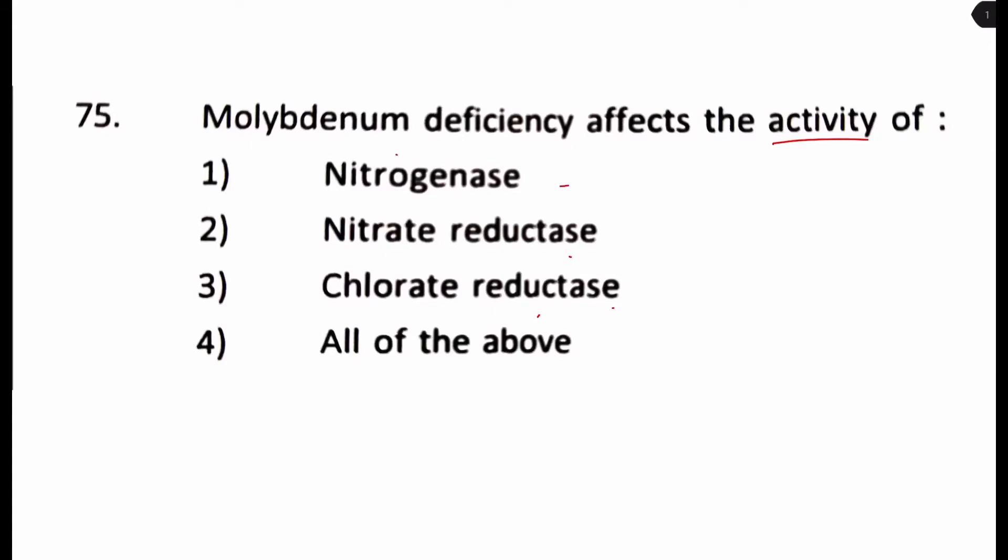So first of all we know that nitrogenase and nitrate reductase both are actually used for nitrogen fixation. But nitrogenase is used in biological nitrogen fixation and nitrate reductase is used in nitrate assimilation. And both these enzymes use the cofactor molybdenum. And when you can't choose 1 or 2 because both are right, the last option all of the above seems correct. And also chlorate reductase also has the molybdenum cofactor. So our answer is number 4.